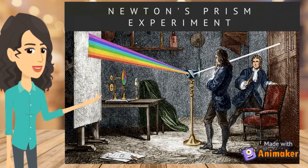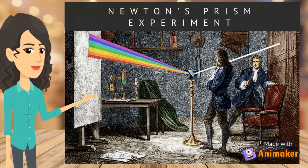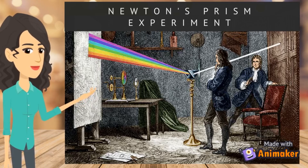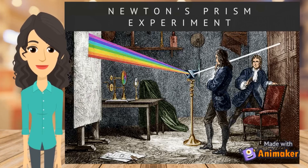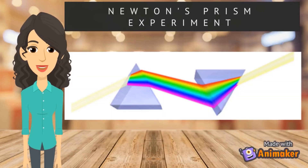The multicolored band of light is called a color spectrum. Newton believed that all the colors he saw were in the sunlight shining into his room. He thought he should be able to combine the colors of the spectrum and make the light white again. To test this, he placed another prism upside down in front of the first prism. He was right — the band of colors combined again into white sunlight. Newton was the first to prove that white light is made up of all the colors that we can see.